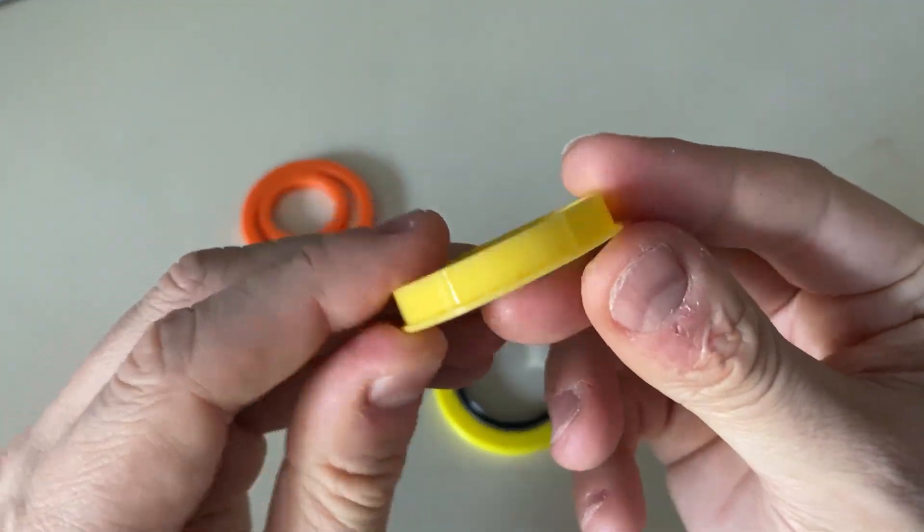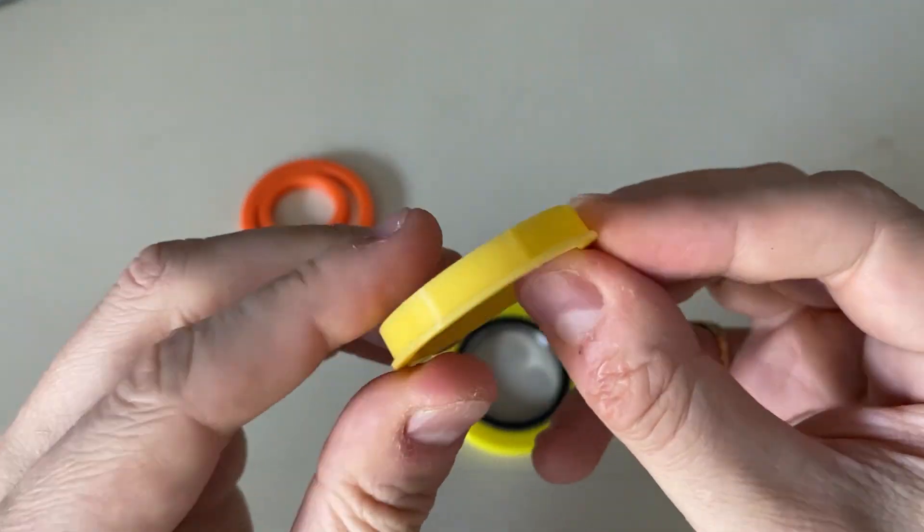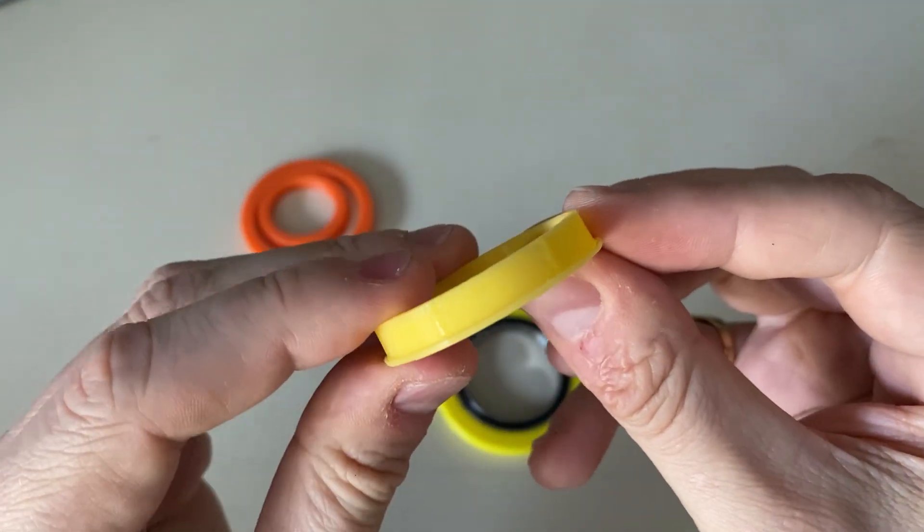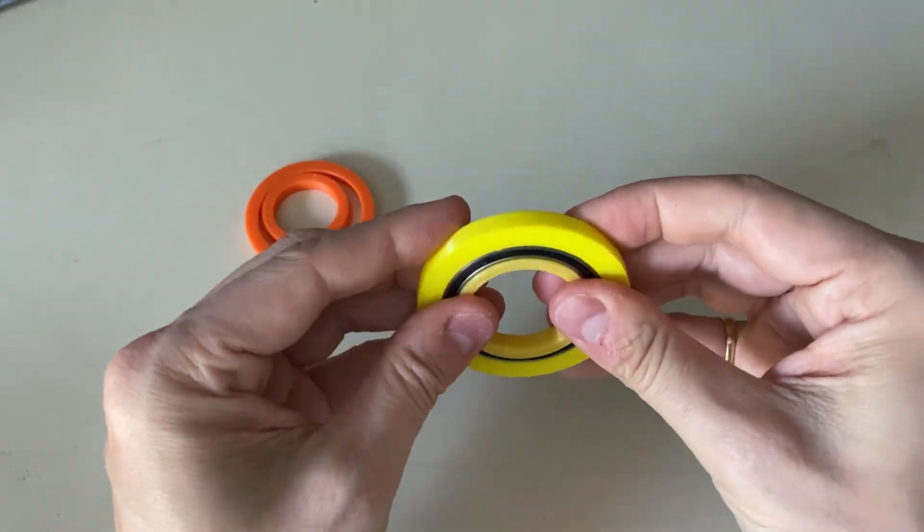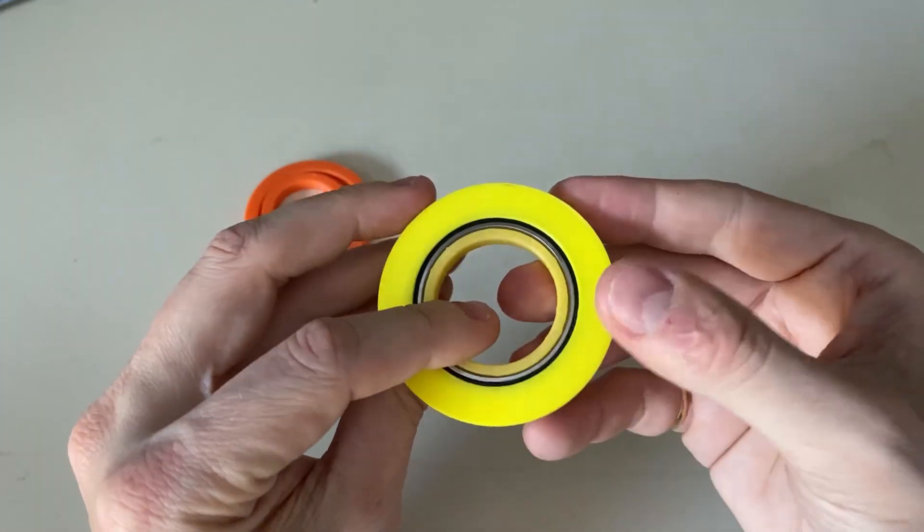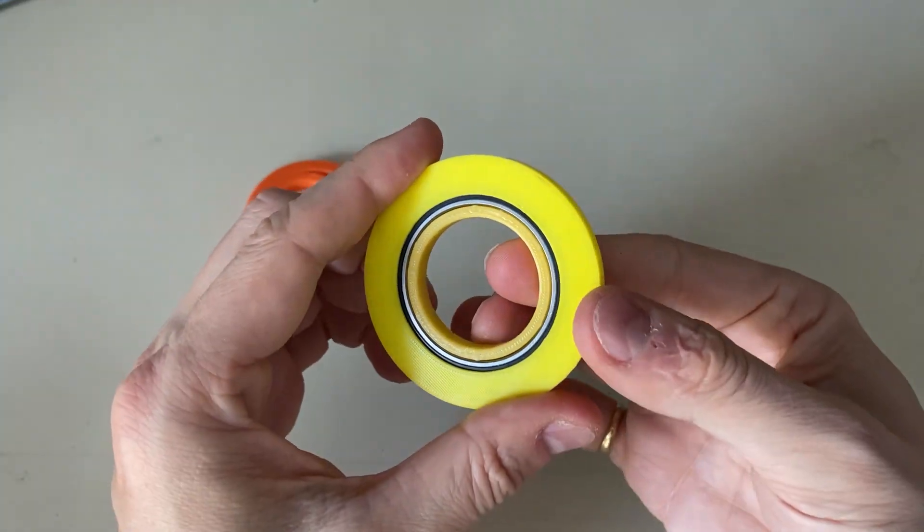And on this one, if I get in real close here and you hold it in the light, you can see there are the same crushed ribs on the outside edge. So this fits in, but again, it's snug. There's no play in there at all.